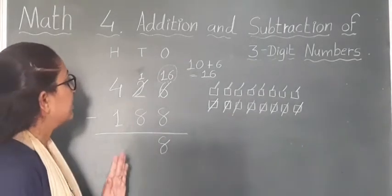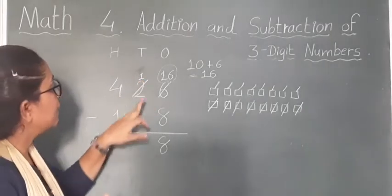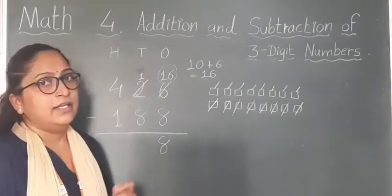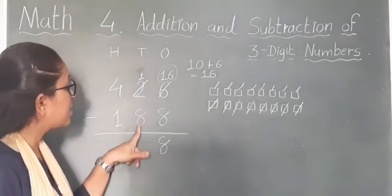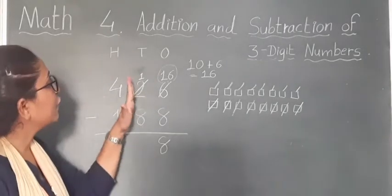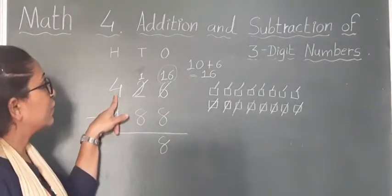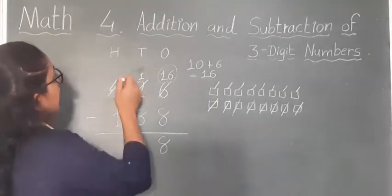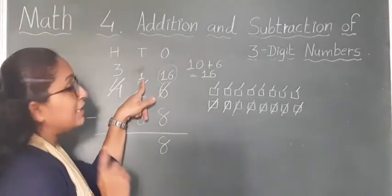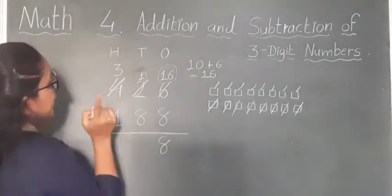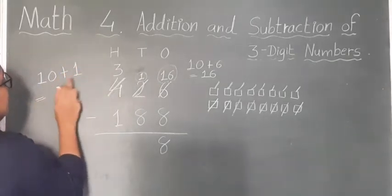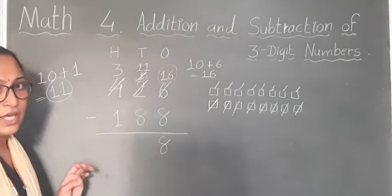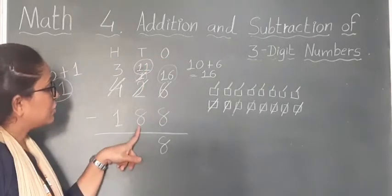Now in the second step, in the 10s place we have 1 ten, and we have to subtract 8 from 1 ten — that is impossible because 8 is bigger than 1. So again we have to borrow from the next place, that is the 100s place. We cut the 4 in the 100s place, borrow 1 hundred as 10 tens, so remaining in 100s becomes 3. We already have 1 ten, so 10 plus 1 equals 11. Now we have 11 tens and we have to subtract 8 from 11.